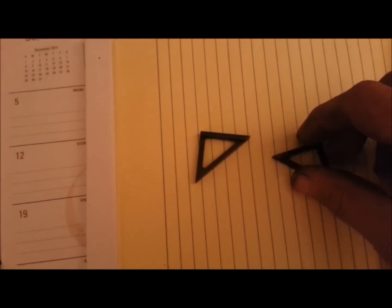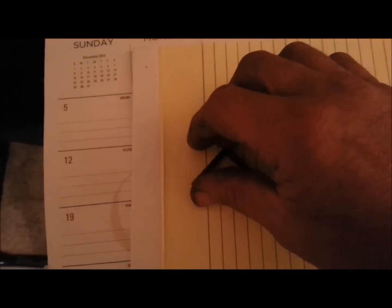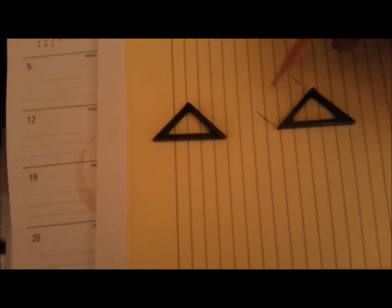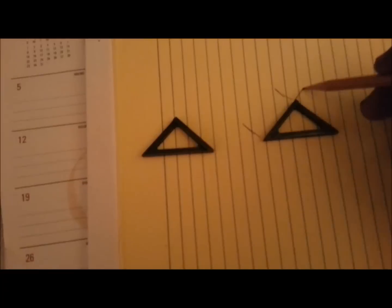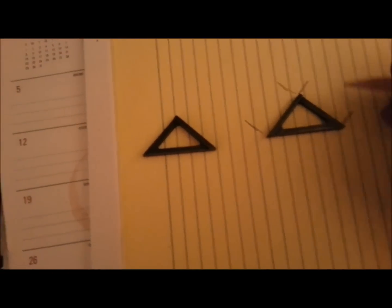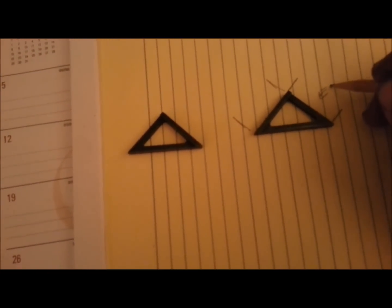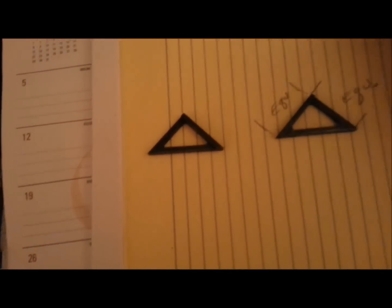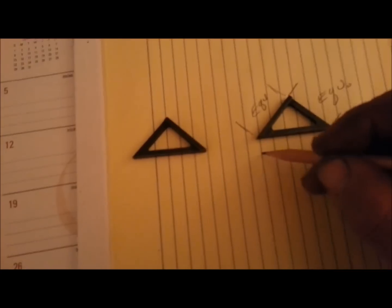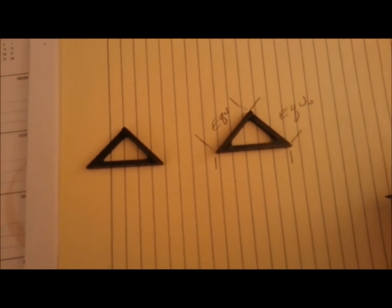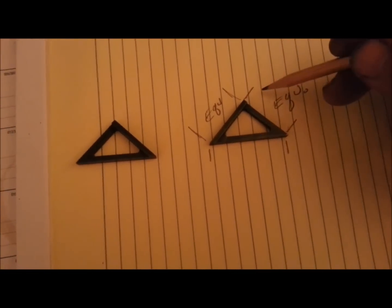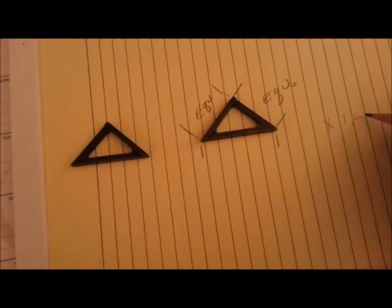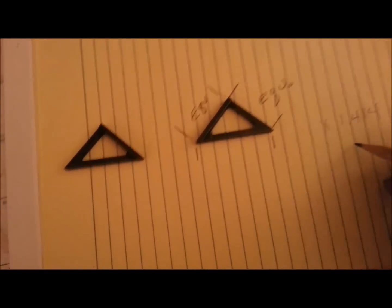The big thing with these is it's simple math to make sure they're square. This dimension here and this dimension here, we'll call that equal. Now this dimension here is going to be this dimension times 1.414, which is the sine of 45 degrees.